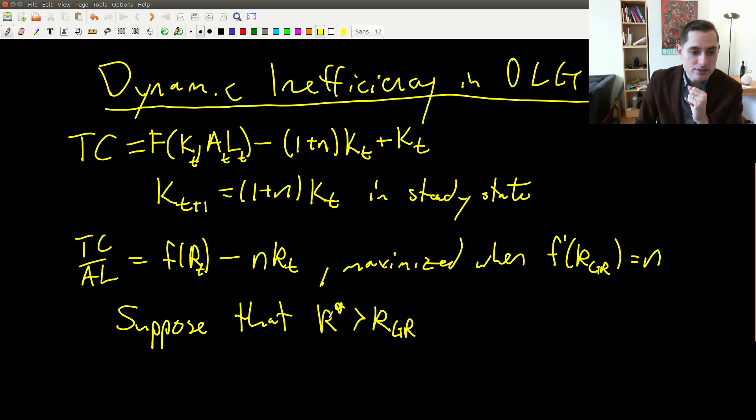So our idea here is that in the first period, we're going to have the young consume more than they otherwise would have, because we're going to force them to save less than they otherwise would have. So in period one, the young are going to have more. And then in period two, in period three, in period four, in period five, and so on and so forth, total consumption is higher than it would have been during the steady state that the market decided on. Total consumption is going to be higher. So if we're the planner, then we can actually give both the old generation and the young generation more than they would have had in the market equilibrium. Does that make sense?